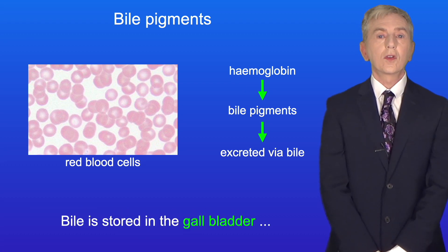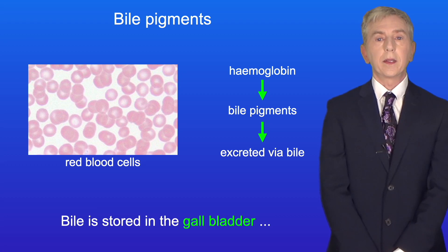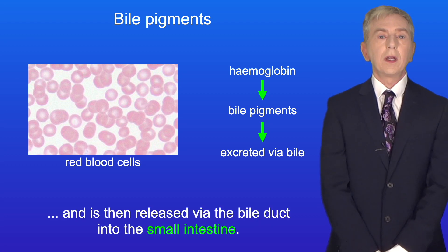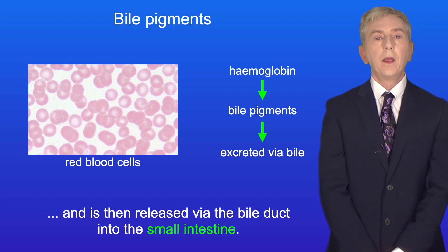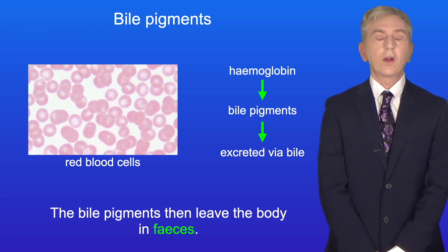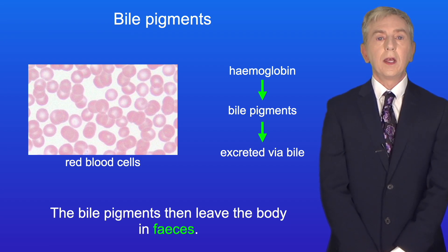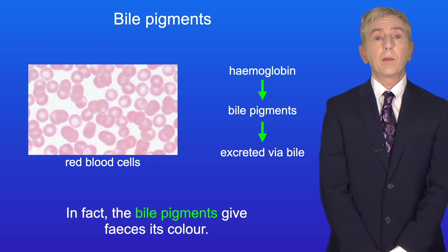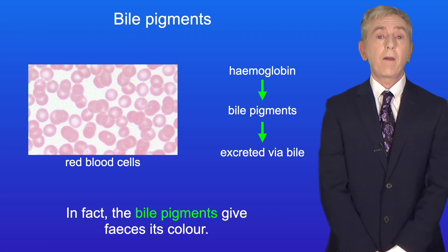Bile is stored in the gallbladder and is then released via the bile duct into the small intestine. The bile pigments then leave the body in feces, and in fact the bile pigments give feces its color.